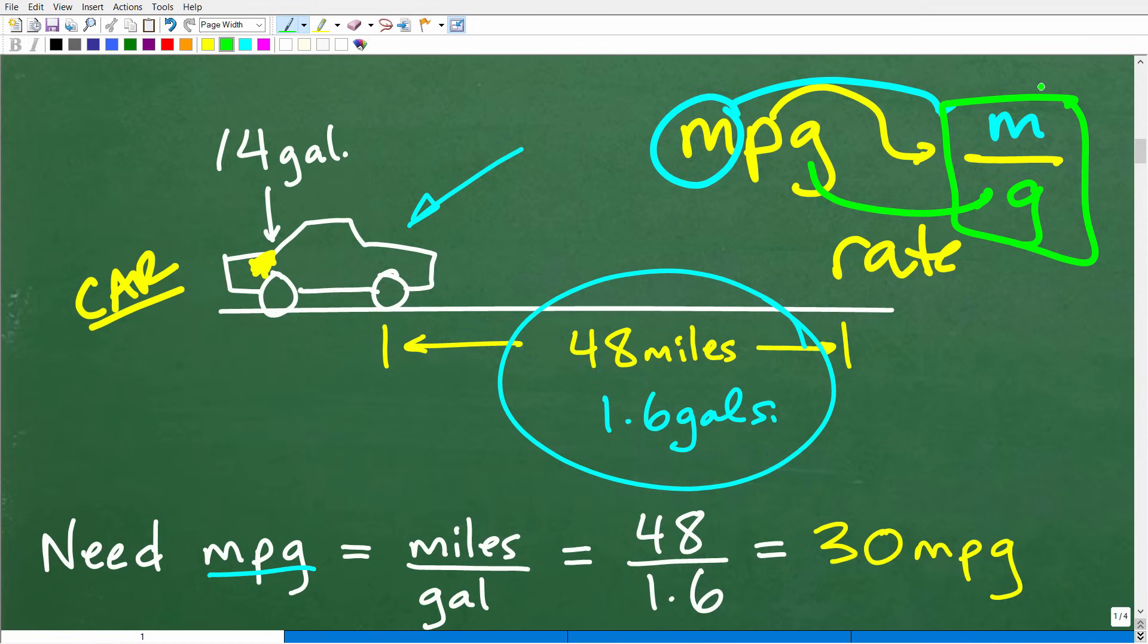So miles per gallon. Okay. This is what we call a rate in mathematics. So the per, when you hear anything, anytime you hear per like miles per hour, this is a fraction bar. Okay. And the letter in front of it is going to be our numerator. And then the letter after the P is going to be the denominator. So this is miles per gallon or miles per hour. So you always want to think in terms of a fraction, but a rate.